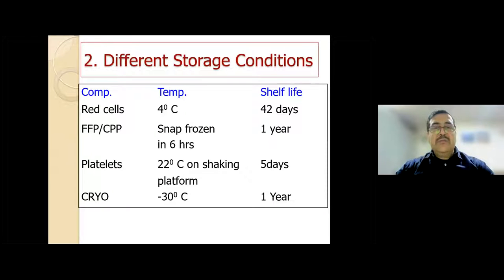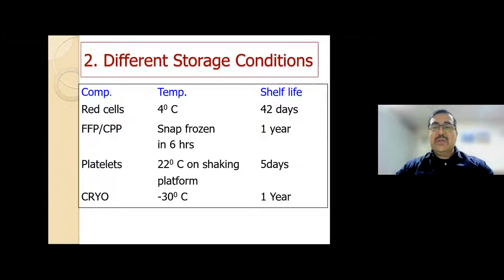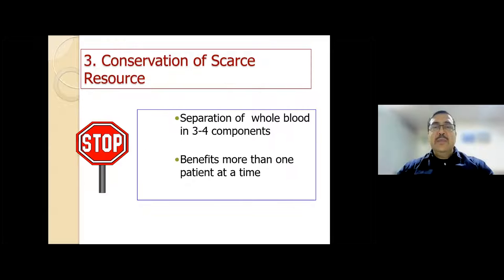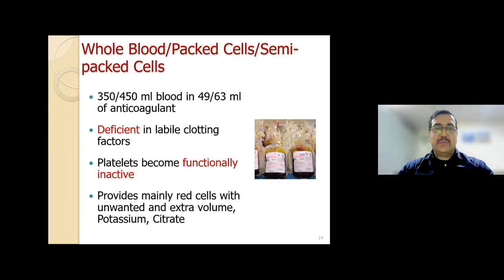Red cells must be stored at 4°C for a shelf life of 42 days. Plasma must be frozen within 6 hours of collection and stored for one year. Platelets are stored at 22°C on a shaking platform for five days. Cryoprecipitate must be stored at below minus 30°C for a shelf life of one year. If we keep whole blood at 4°C, we lose other components. Third, blood is a scarce resource that must be conserved—as a country, we don't have enough components for all our patients.